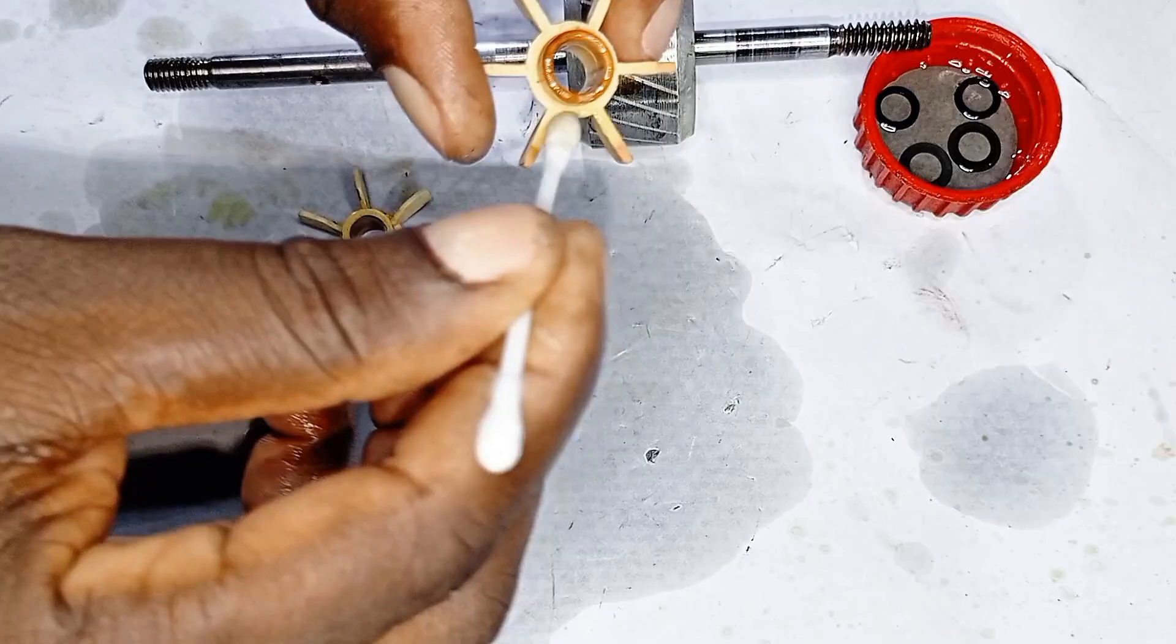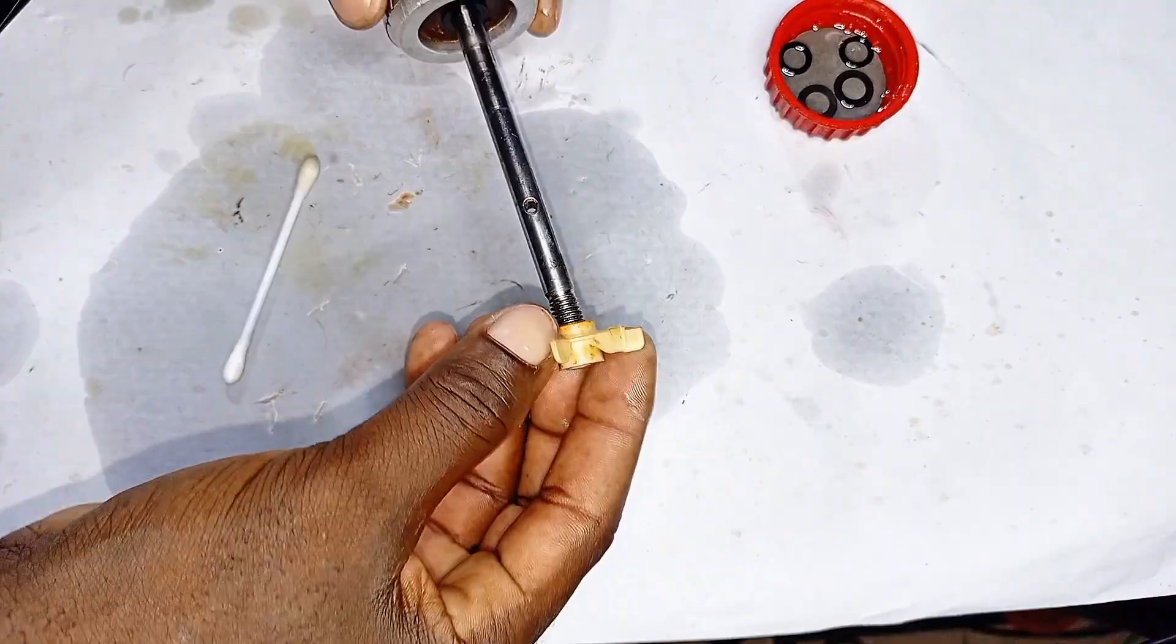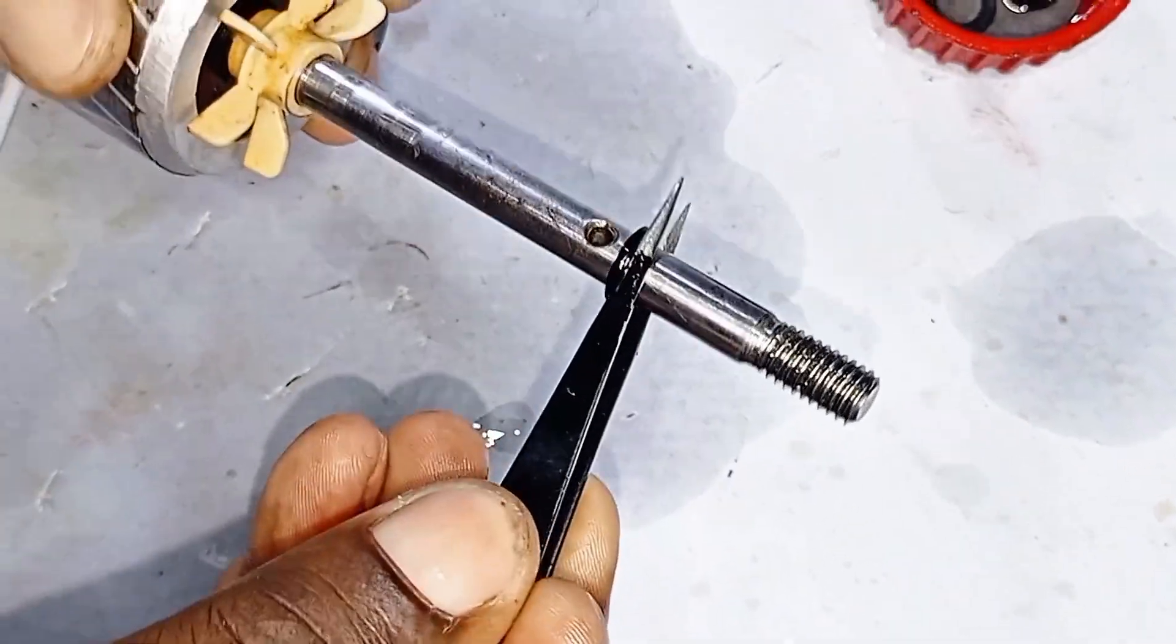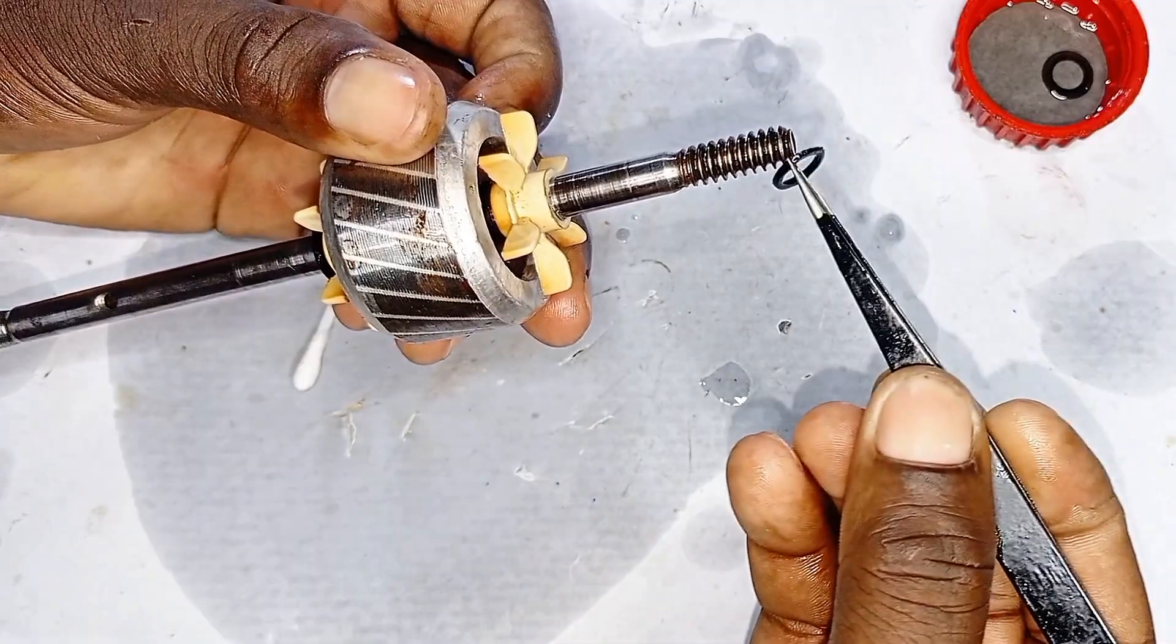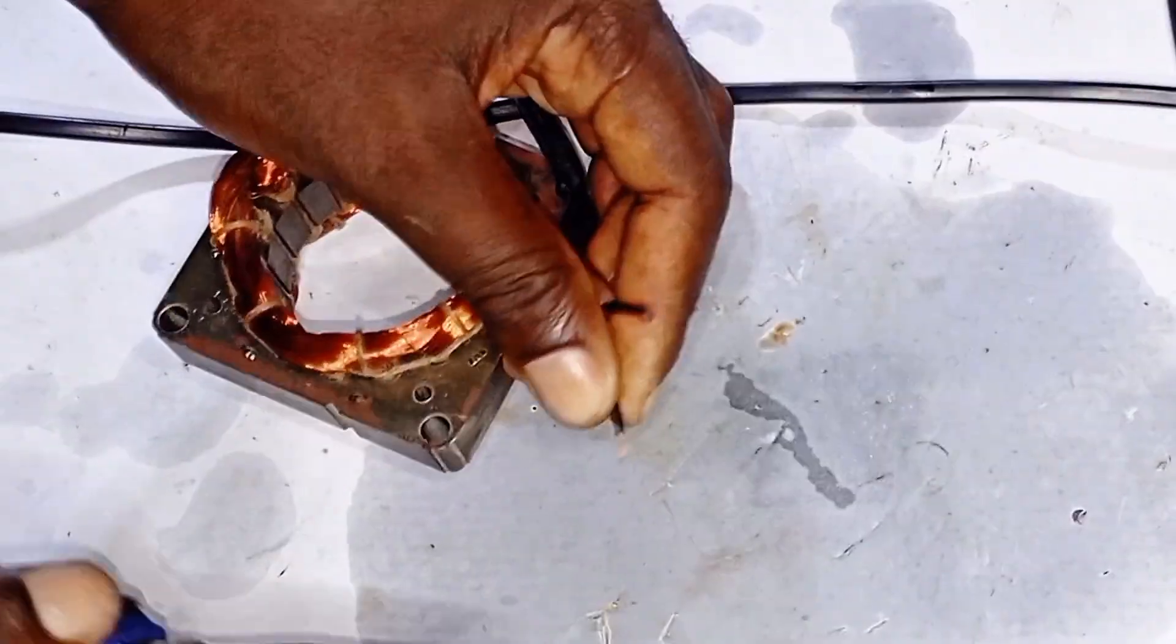Now that every small part is clean and oiled, it's time to reassemble with care. Every washer, every cooling fan blade—it all needs to fit just right or the fan won't work.